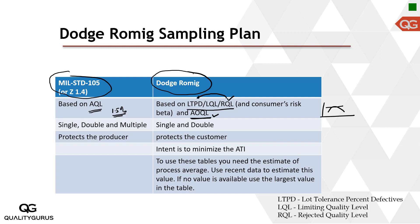Looking at further differences: MIL STD 105 or Z1.4 has single sampling, double sampling, and multiple sampling, whereas in Dodge-Romig you don't have multiple sampling — you either have single or double sampling. We will focus on single sampling only in the examples that follow.